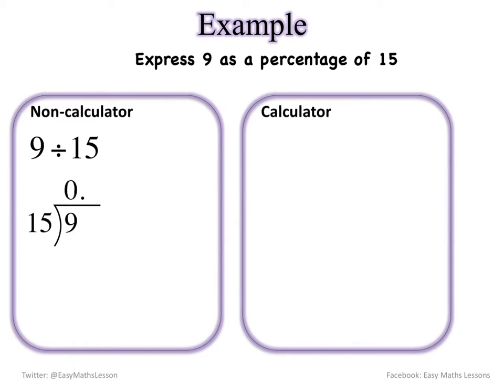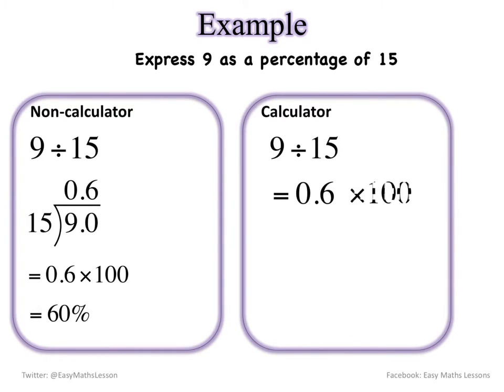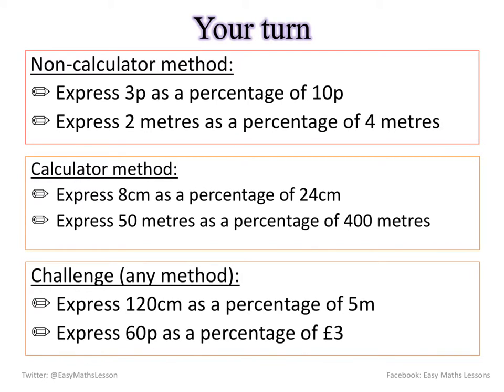I cannot go into 9 so I need to put a 0 on top with a decimal point. Now if I put a decimal point here at the top I must put a decimal point with a 0 at the bottom. So 15 goes into 90 this time and it goes in 6 times. So in other words 0.6 times 100 which is 60%. Calculator method far easier: 9 divided by 15, 0.6 times 100, I'll get 60%. Okay your turn.